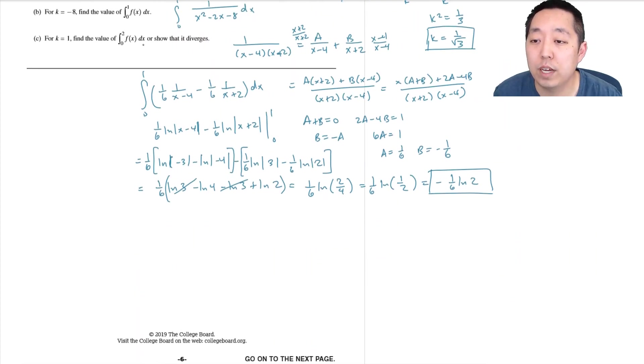Part (c): For k equals 1, find the value of the integral from 0 to 2 of f(x) dx or show it diverges. So this is the integral from 0 to 2 of 1 over (x squared minus 2x plus 1) dx. That becomes the integral from 0 to 2 of 1 over (x minus 1) squared dx.